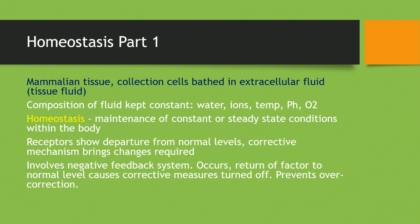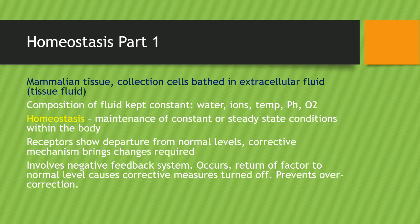Homeostasis part 1. The key parts will be in white, with headings in yellow. The bits in blue aren't necessarily what you need to know most — this has changed throughout the creation of the PowerPoint, so sometimes they appear yellow to highlight, with dark blue or purple as the main content. Just follow through — you can take down everything if you need to. Mammalian tissue is a collection of cells bathed in an extracellular fluid called tissue fluid. Homeostasis keeps the composition of this fluid constant — covering water, ions, temperature, pH, and O2. Homeostasis is the maintenance of constant or steady state conditions within the body. Learn that definition — you'll be thankful for it.